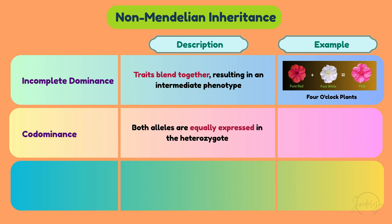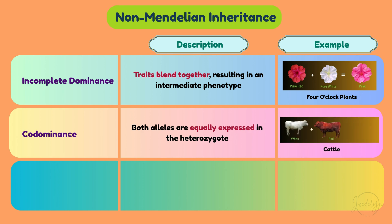Codominance: both alleles are equally expressed in the heterozygote, such as when red and white cows produce a spotted offspring with both red and white colors visible.